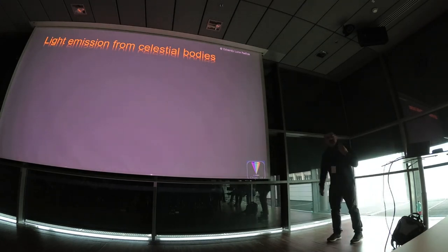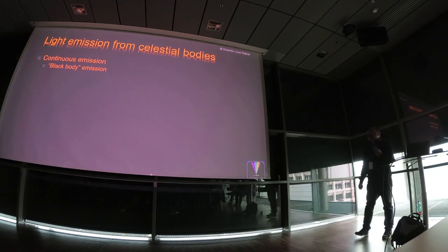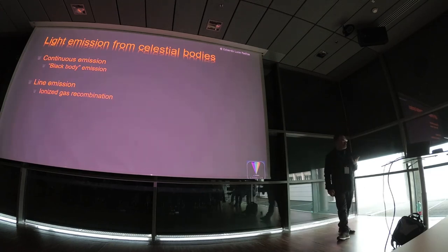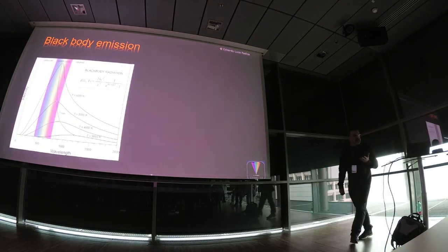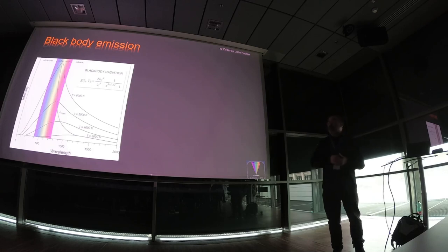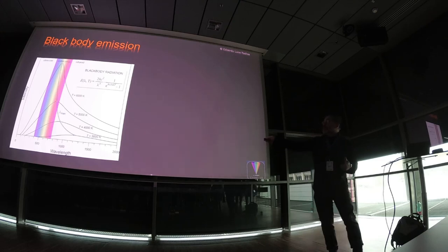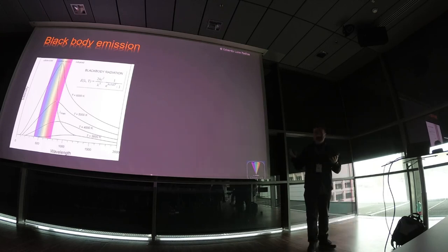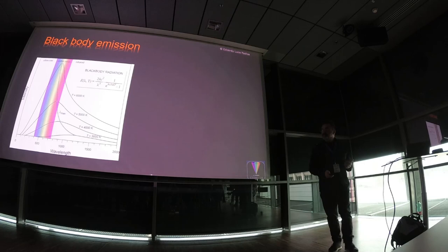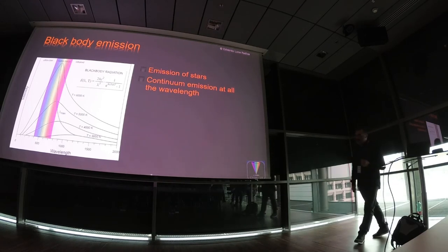So, from where does the light from celestial bodies come? We have two mechanisms of emission. The continuous emission from black body emission, and the line emission from ionized gas recombination. The black body emission is typical of stars. We have a continuous emission with a typical curve — the black body radiation. The peak of the radiation depends only on the temperature, and also the shape of the curve depends on the temperature, but is more or less continuous inside all the visible range of light.